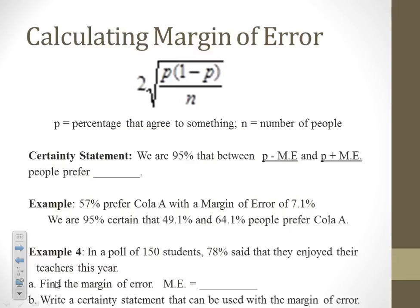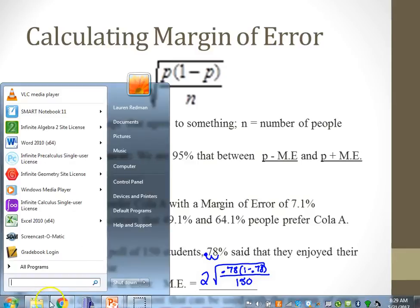For example: 57% of people prefer cola A with a margin of error of 7.1%. That means we are 95% certain that between 49.1% and 64.1% of people prefer cola A — a big range because the margin of error is large. In example four, in a poll of 150 students, 78% said they enjoyed their teachers this year. To find the margin of error, we express the percent as a decimal, 0.78, and calculate 2 times the square root of 0.78 times (1 minus 0.78) divided by 150, being careful with parentheses in the calculator.